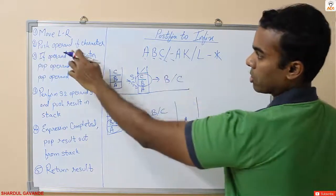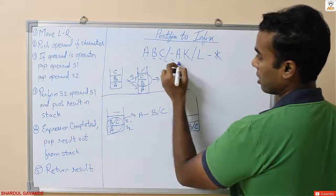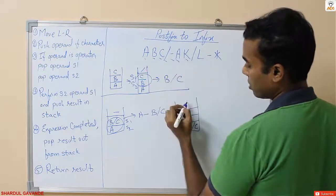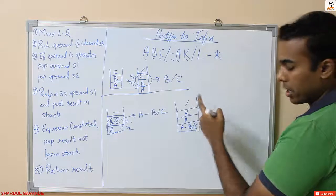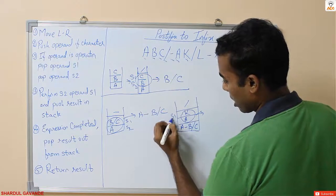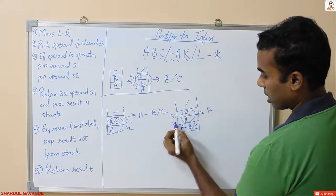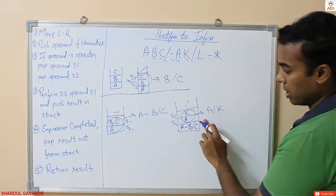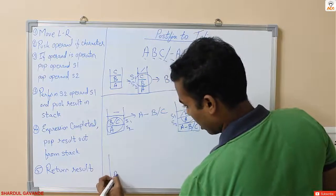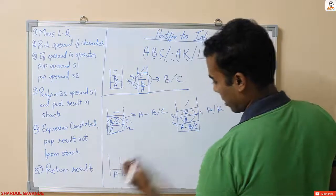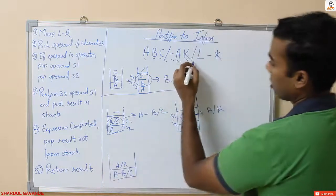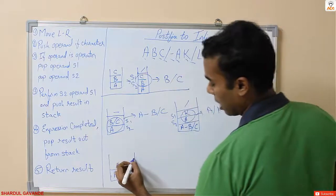Continuing with the sequence, I have 'a' — it is a character so I push it into the stack. Then I have 'k', which is also a character so I push it. Then I have a division operator. Since it is an operator, I pop s1 and s2 — s2 is 'a' and s1 is 'k' — giving the result 'a divided by k'. I put it back into the stack.